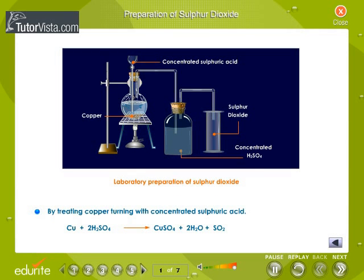Another method of preparation of sulfur dioxide is by treating copper turnings with concentrated sulfuric acid: Cu + 2H2SO4 gives CuSO4 + 2H2O + SO2.